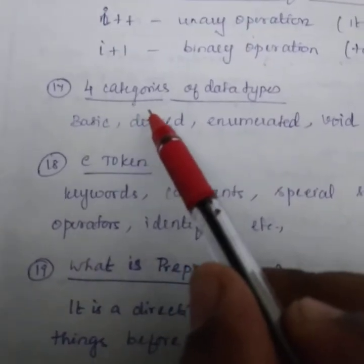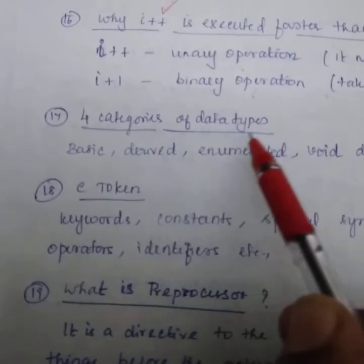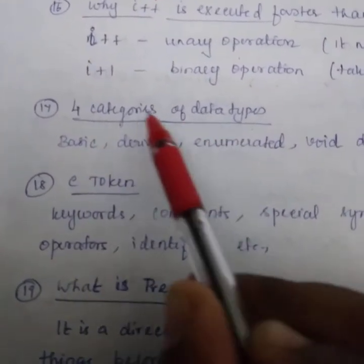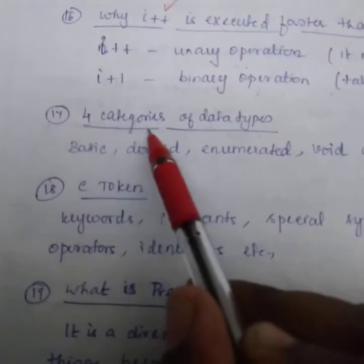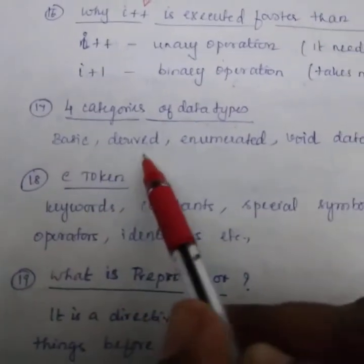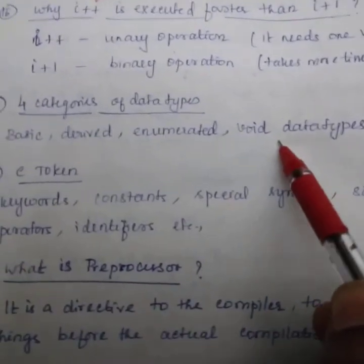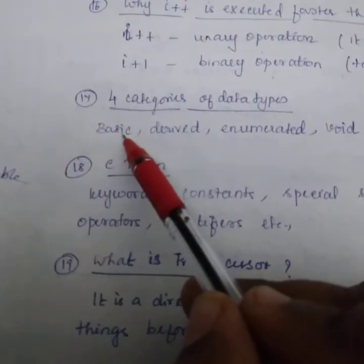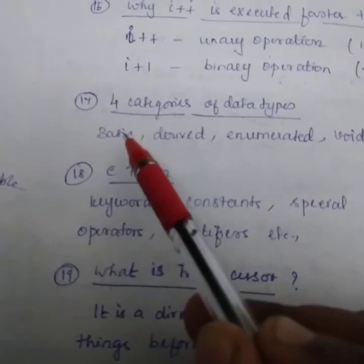Next question, four categories of data types. This is not basic. Generally speaking, four categories of data types. That is basic, derived, enumerated, and void. Only if they ask basic data types, you need to write int, float, etc.